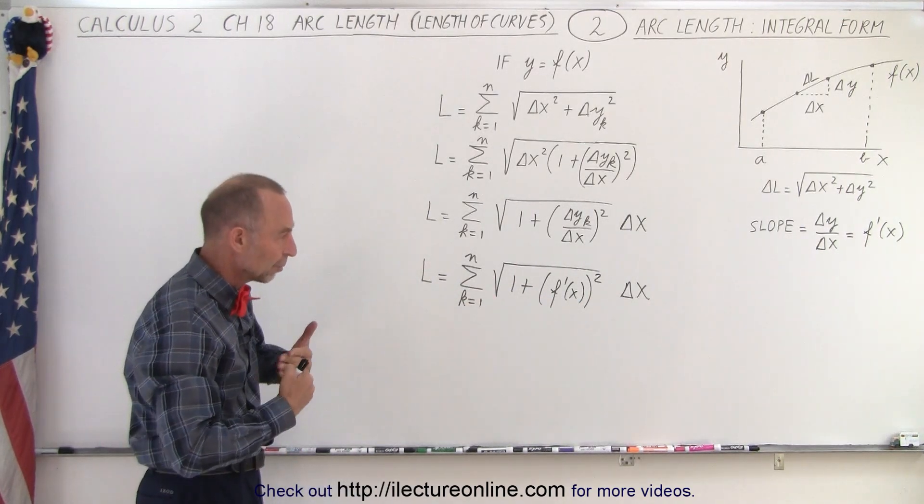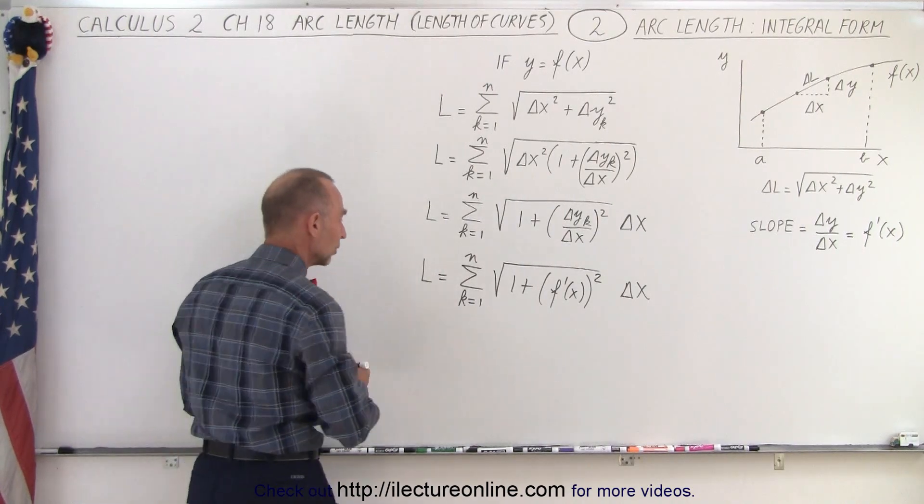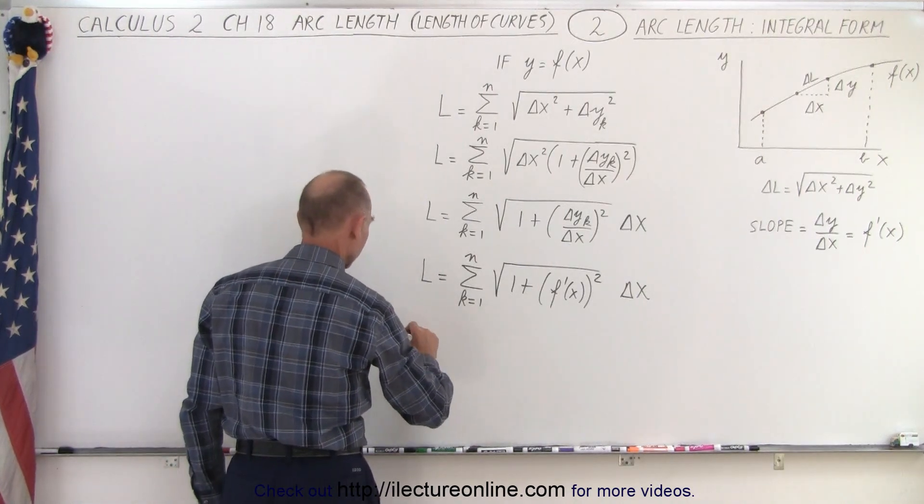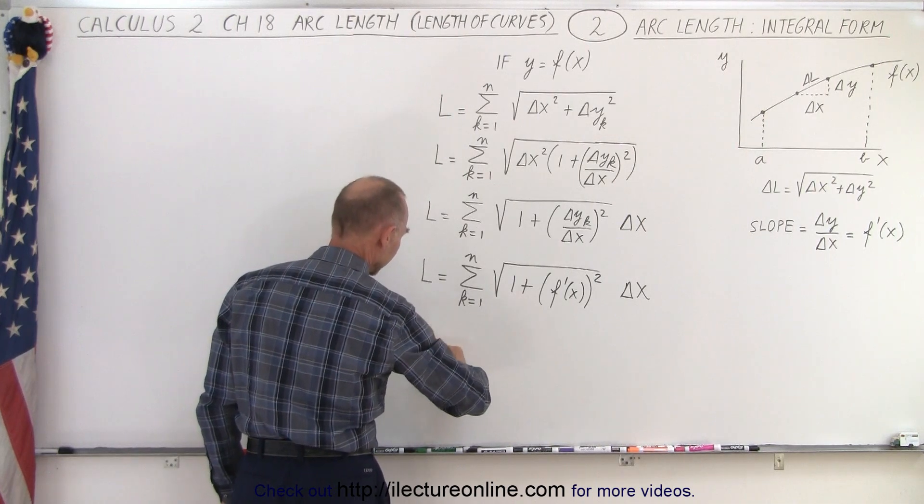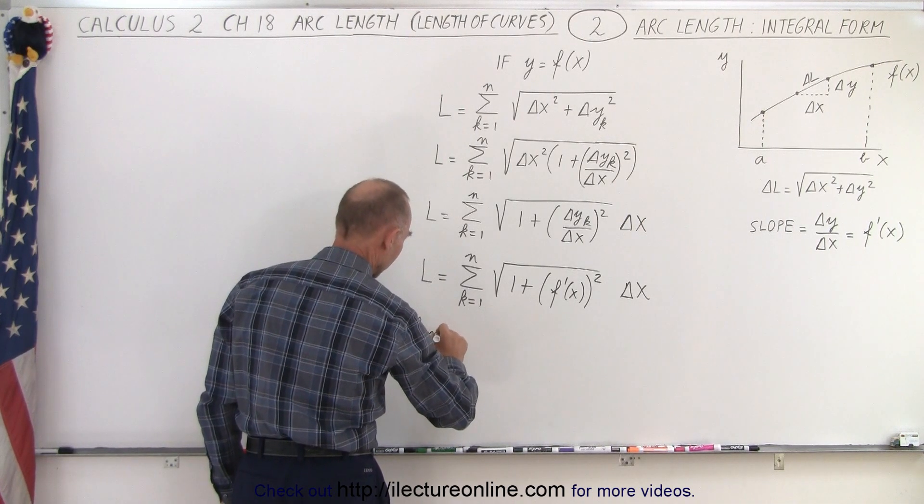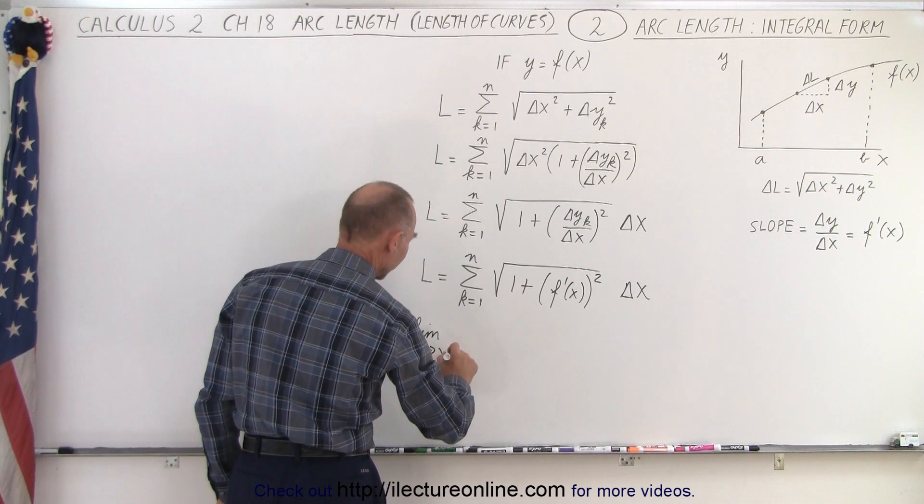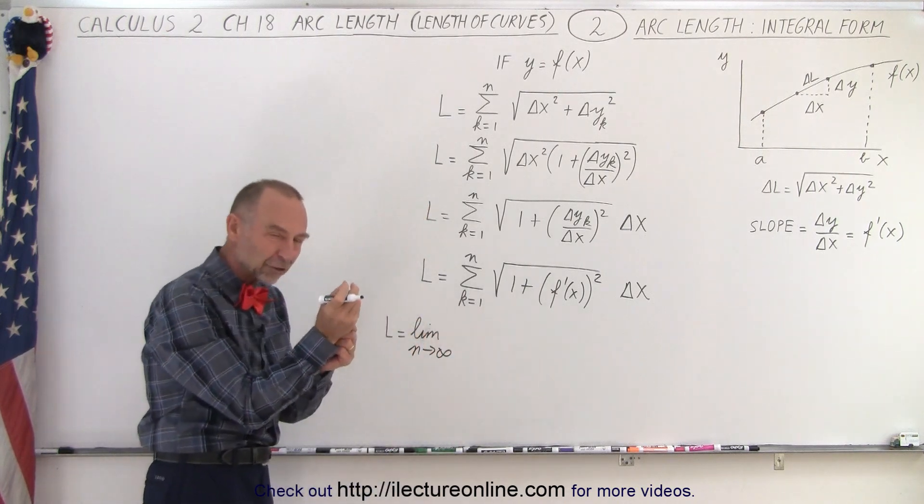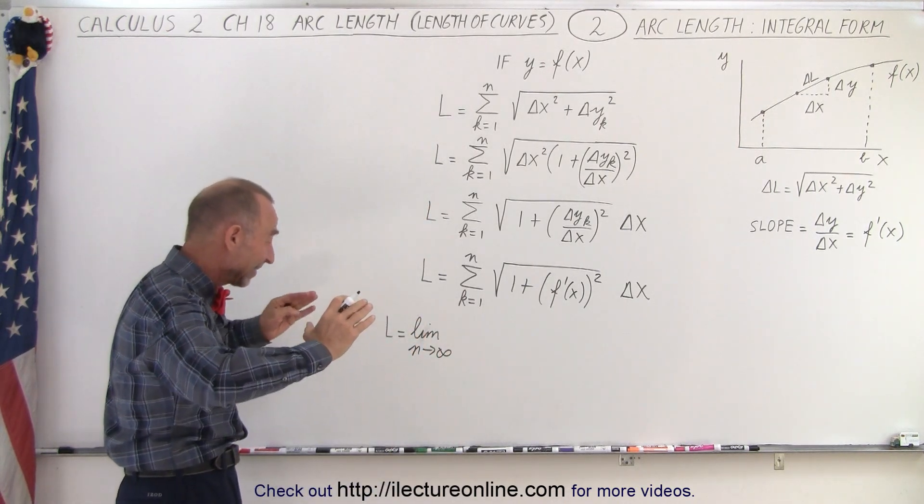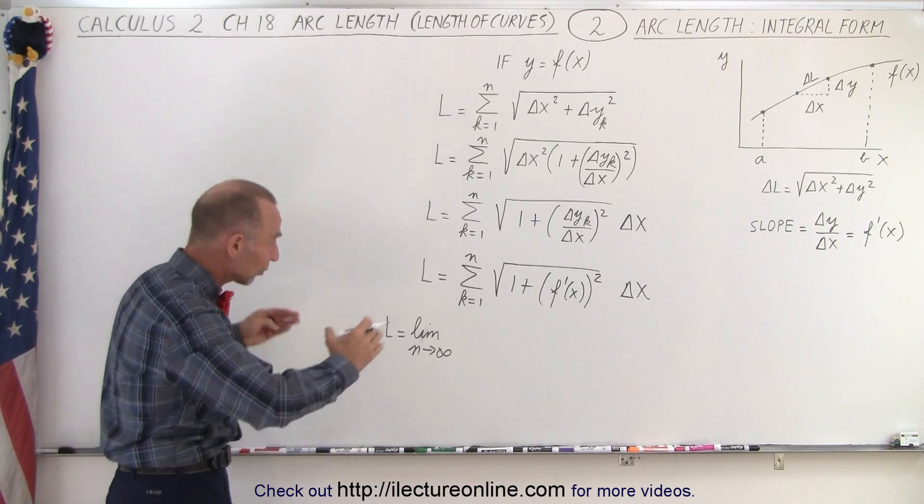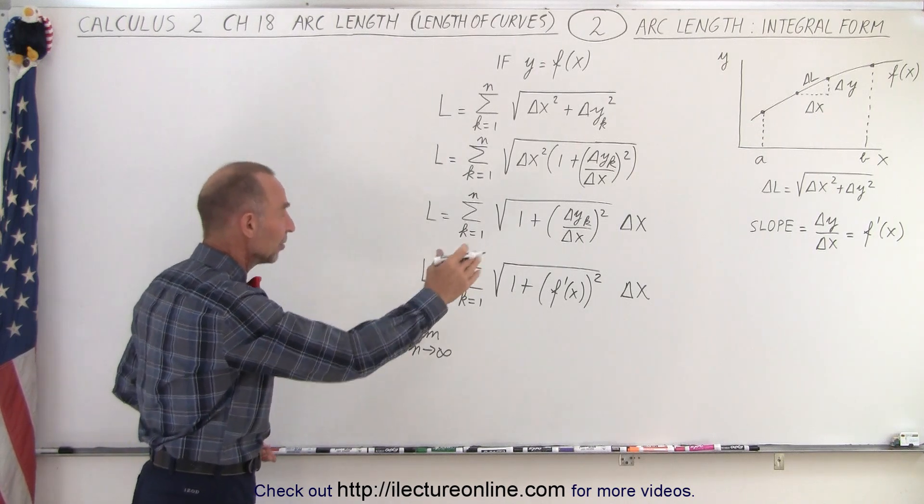Of course, if you want it then to put into integral format, you're now going to take the limit of this. So L is equal to the limit, forgot my eye, the limit as n goes to infinity. So now we're making the delta x smaller, smaller, smaller. So as delta x goes to 0 or n goes to infinity, we have an infinite number of these.